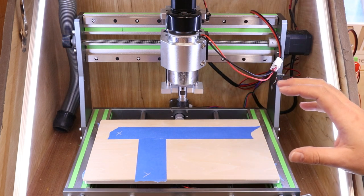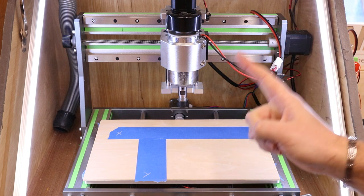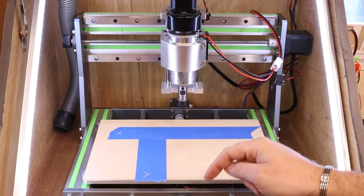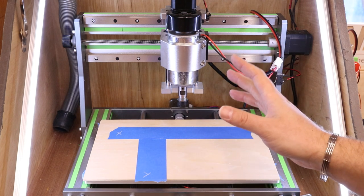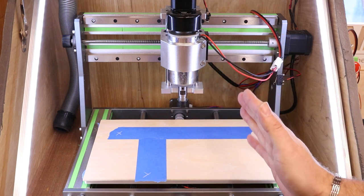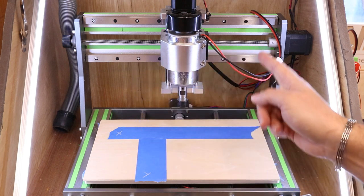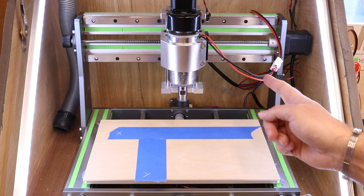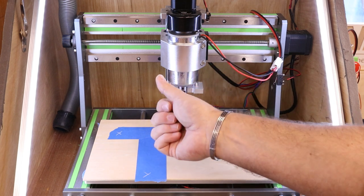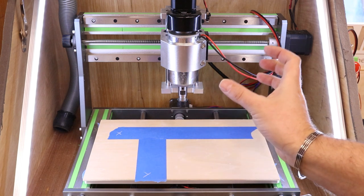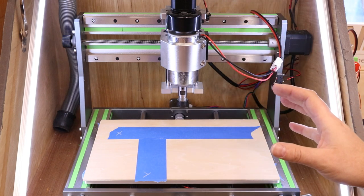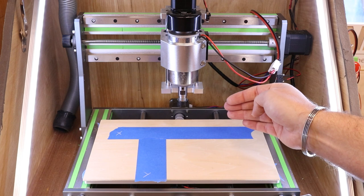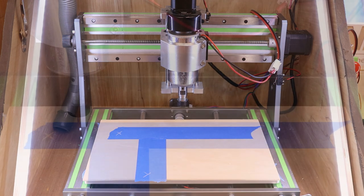Before we get stuck in with the testing, a couple of key important points. Only ever test one axis at a time. If you're doing the X axis, do the tests and measurements for that before moving on to the Y axis. The second point is we need to make sure there is no backlash within the axis. We need to move it a short distance first, maybe 10 millimeters, before then moving it to 100 millimeters.